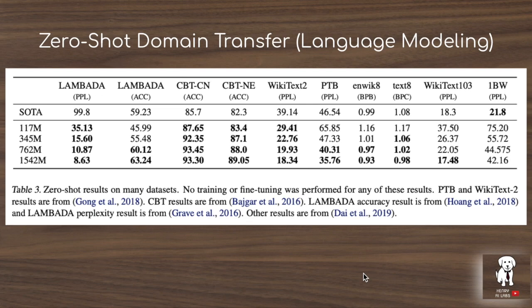The first interesting result is zero-shot domain transfer for language modeling: trained on WebText and evaluated on other datasets like Lambada — constructed for long-range context modeling — and the Children's Book datasets. When doing the language modeling task of predicting the next token and sliding the mask on WebText, the model still performs the language modeling task when transferred to out-of-distribution datasets it was never trained on, which is really remarkable.